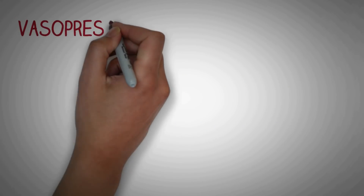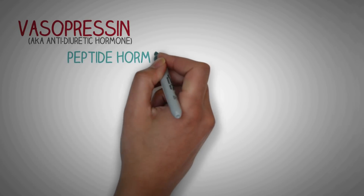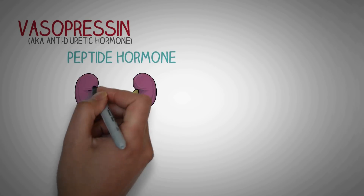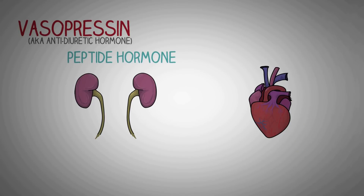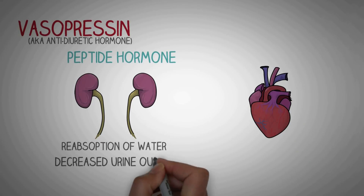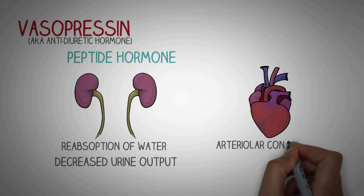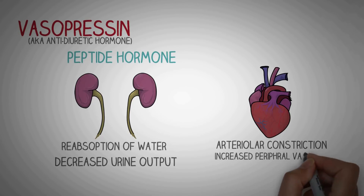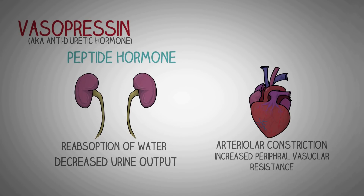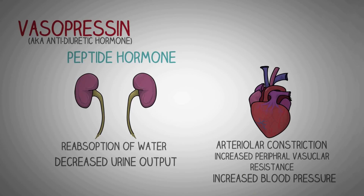Vasopressin, also known as antidiuretic hormone, is a peptide hormone that mainly acts on two important places: the kidneys and the blood vessels. In the kidneys, vasopressin causes reabsorption of water and decreases urine output. In the blood vessels, it causes constriction, increases peripheral vascular resistance, and thus increases blood pressure.